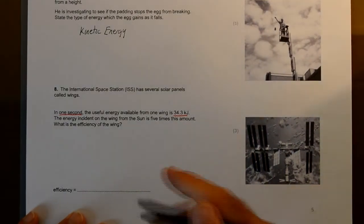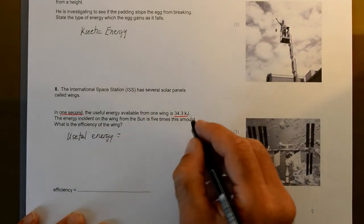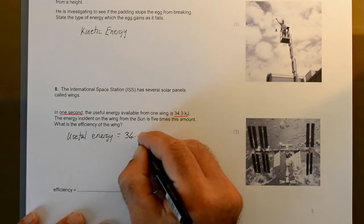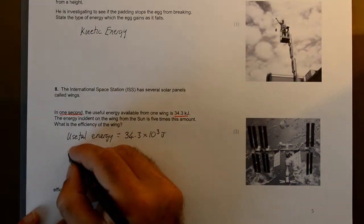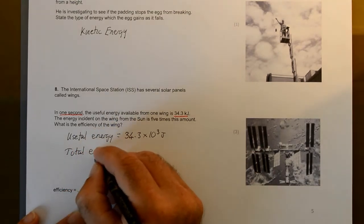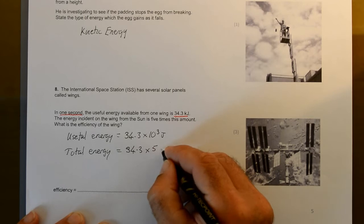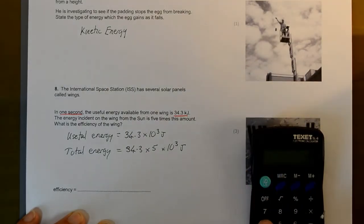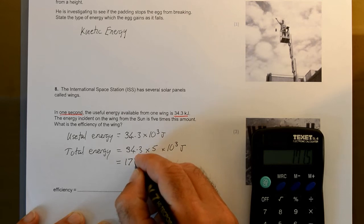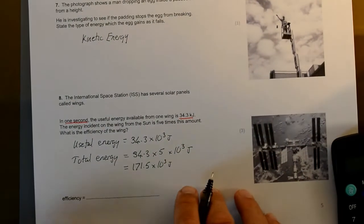So the useful energy is 34.3 kilojoules, or 34.3 times 10 to the 3 joules. The total energy is five times that: 34.3 times 5, or times 10 to the 3 joules. 34.3 times 5 equals 171.5 times 10 to the 3 joules.